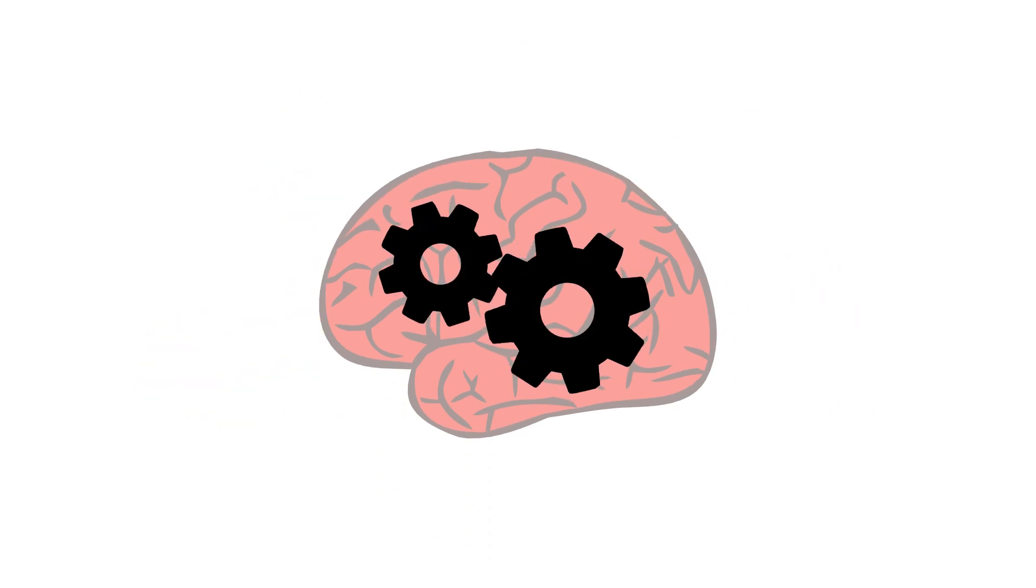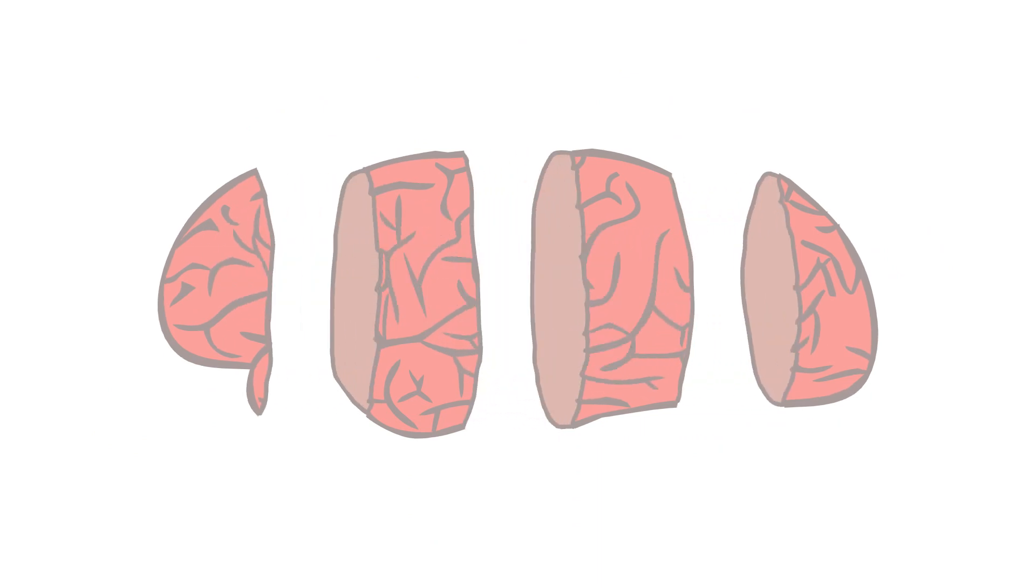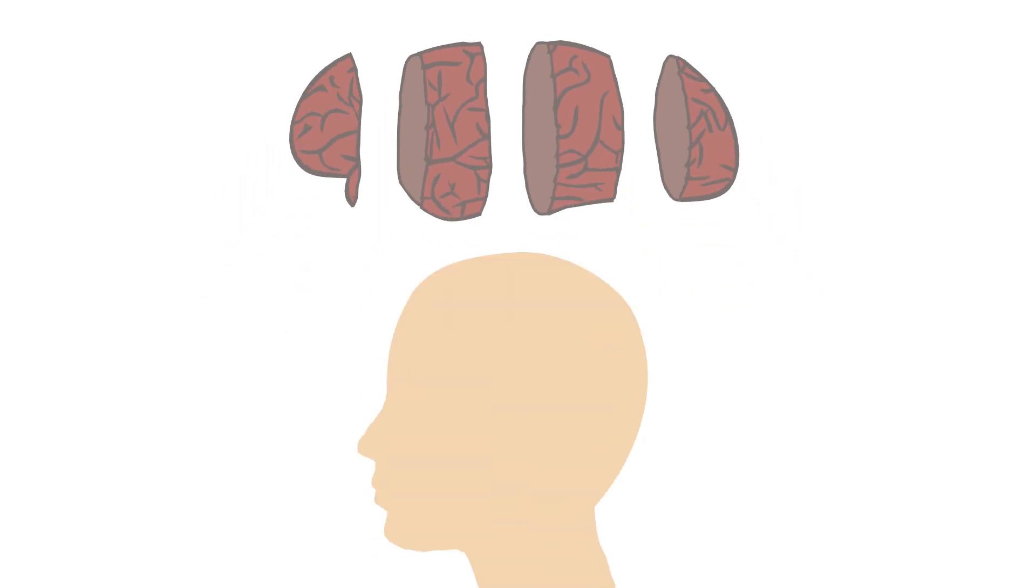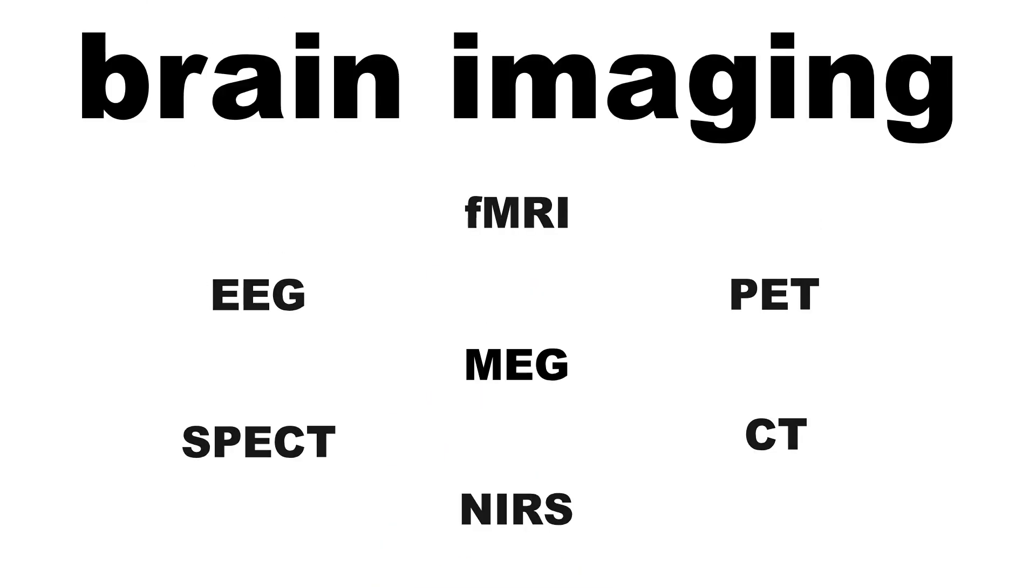The obvious way to see how something works is to pull it out, open it up and have a look, but when you do that with a brain, it stops working and tends to upset its owner, so what we really need are ways to study brains while they are working inside people's heads. Which isn't easy, but can be done with a range of different brain imaging techniques.